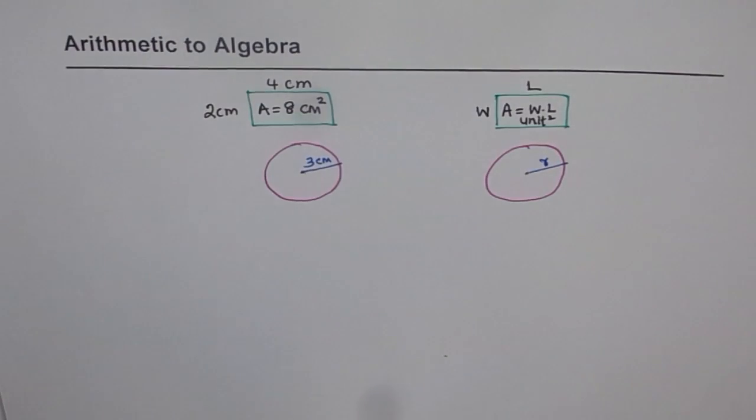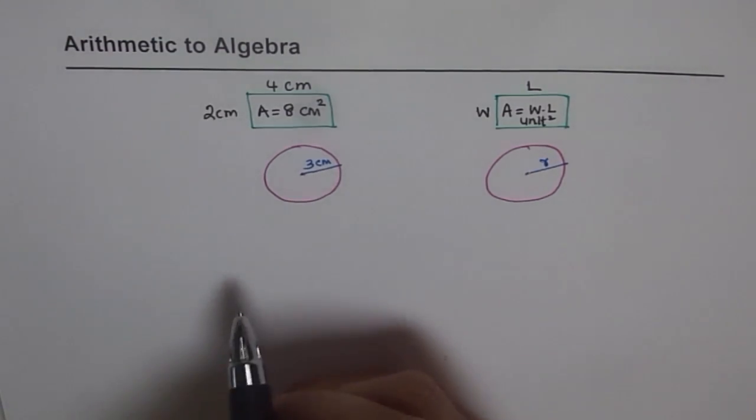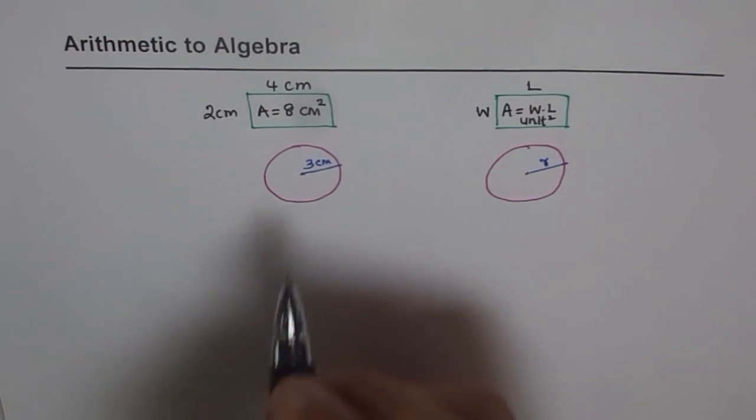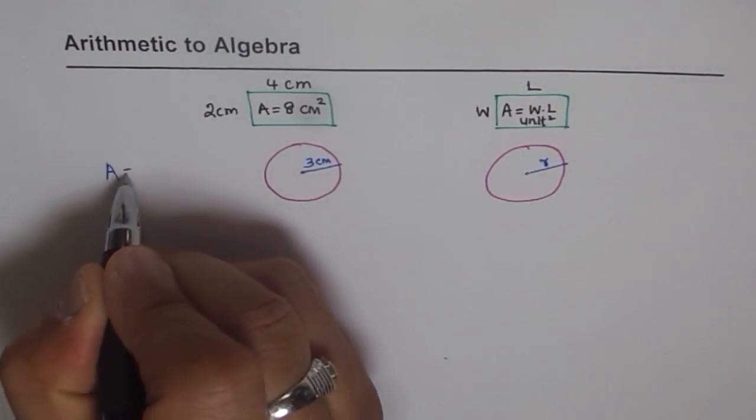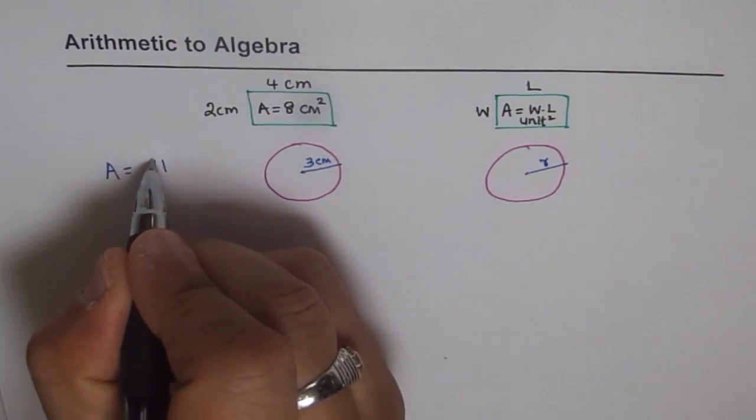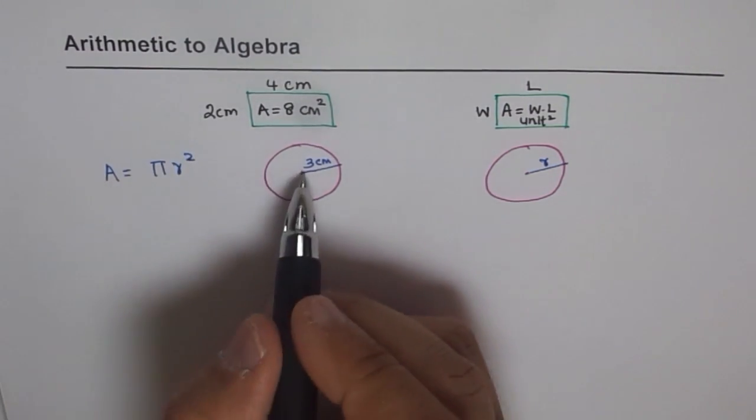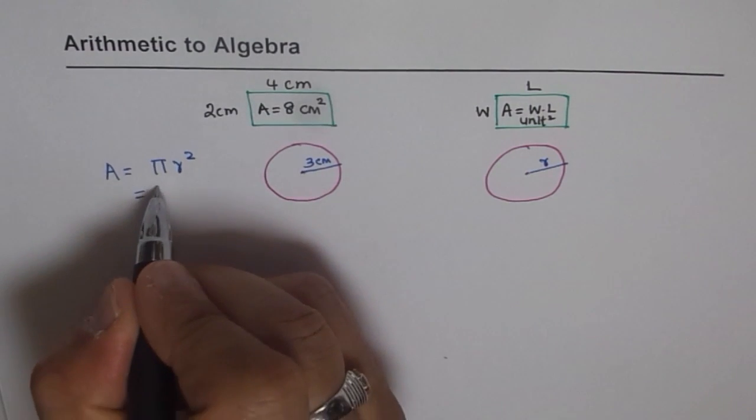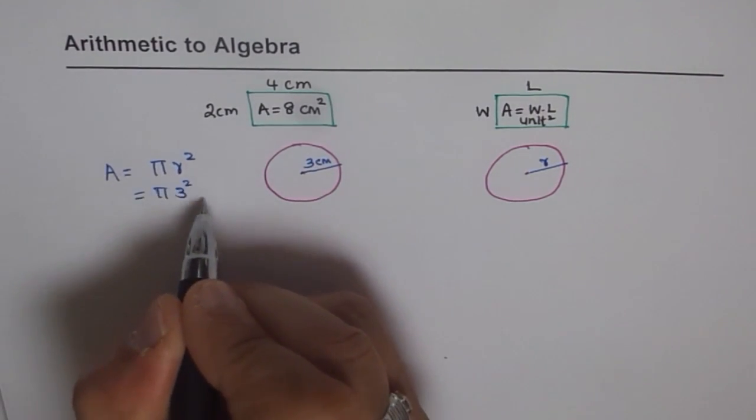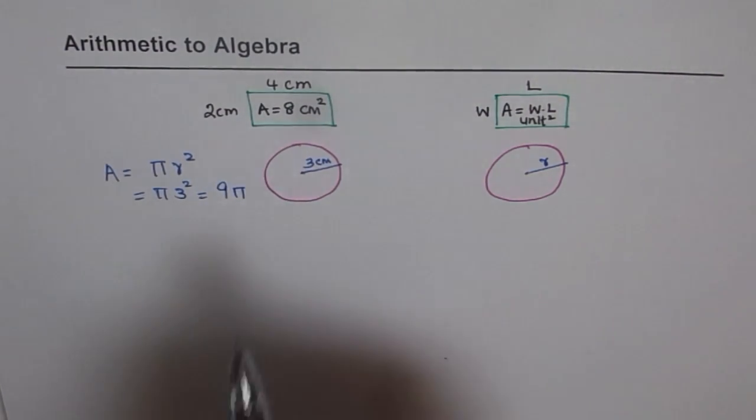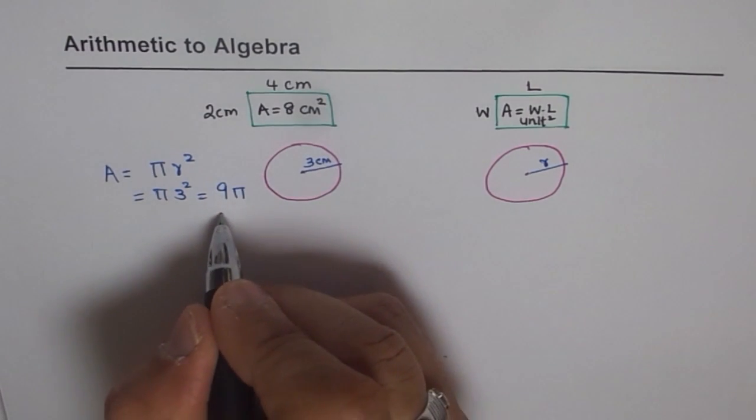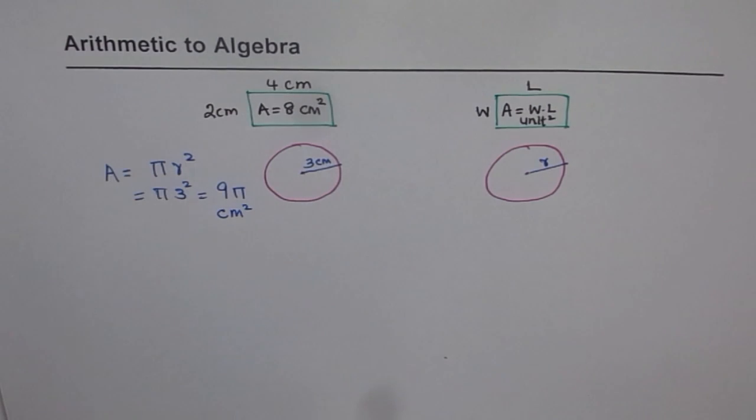So if radius is three centimeters, then what is the area of this? Area of a circle is pi R square. So area of this circle will be pi three square. Pi three square means nine pi. Units will be centimeter square. So we will write nine pi centimeter square. That is the area of our circle.